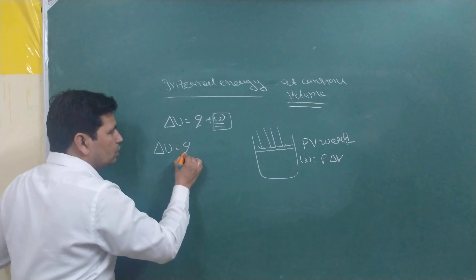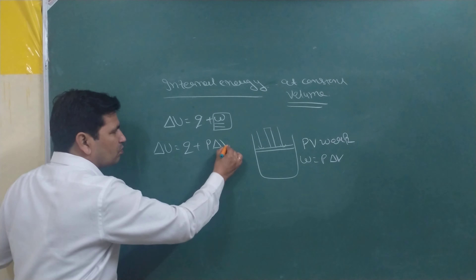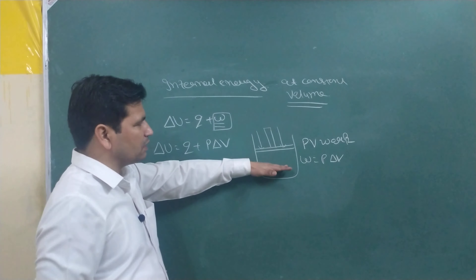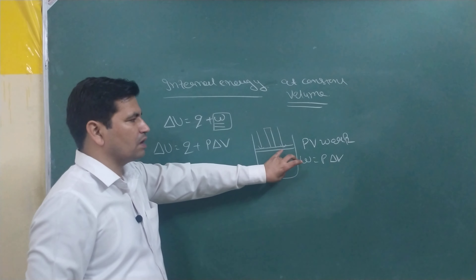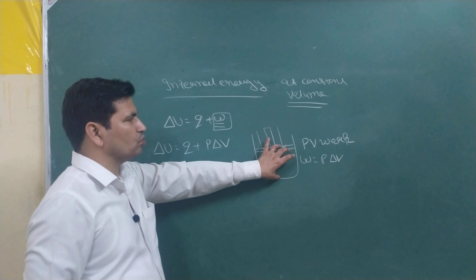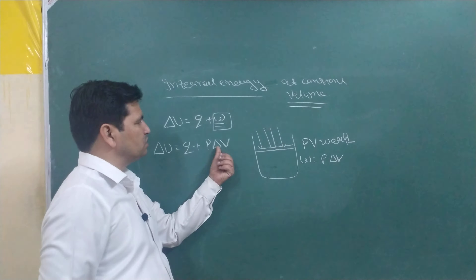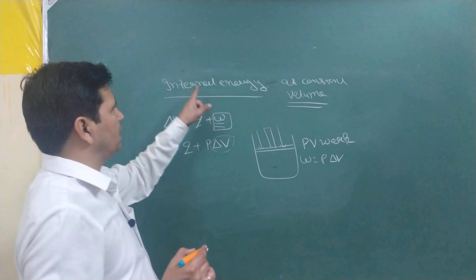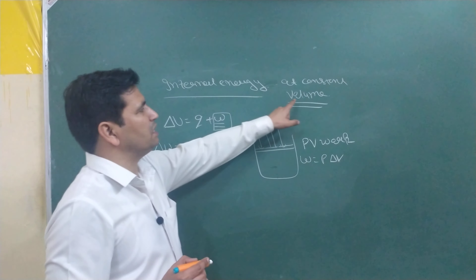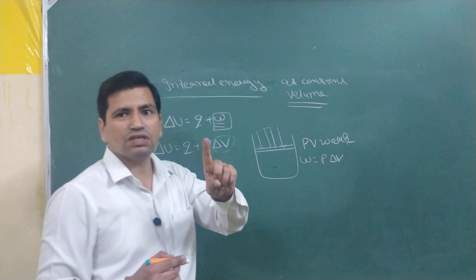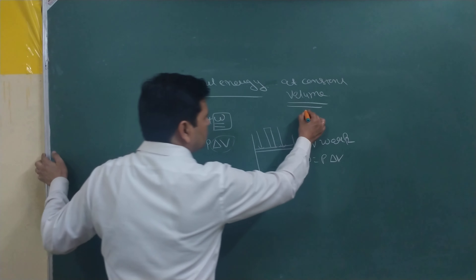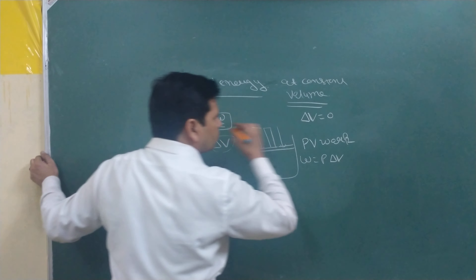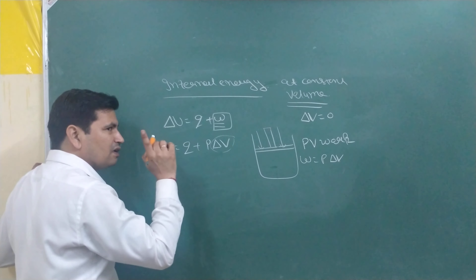In thermodynamics, when you apply pressure to a system, the volume will increase and the internal energy will change. For internal energy, delta V must be zero — meaning the change in volume is zero. I have not said that the volume itself is zero, just that the change in volume must be zero.